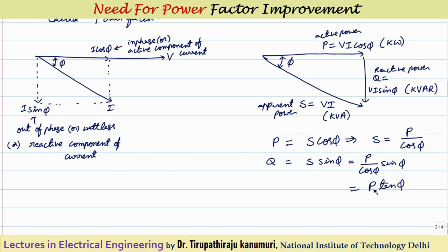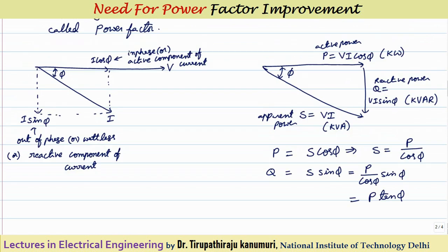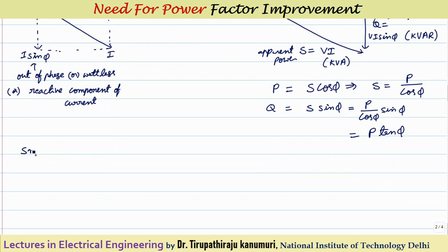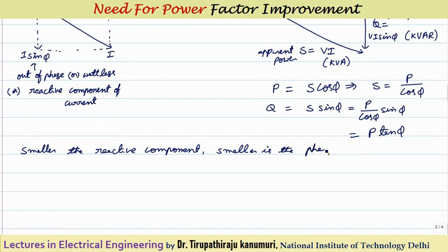If you know the active power and the angle phi, you can calculate the reactive power using Q = P·tan phi. The key observation here is: the smaller the reactive power component, the smaller is the angle phi, and the smaller the angle phi means a better power factor. So summarizing: smaller reactive component → smaller phase angle → higher power factor.